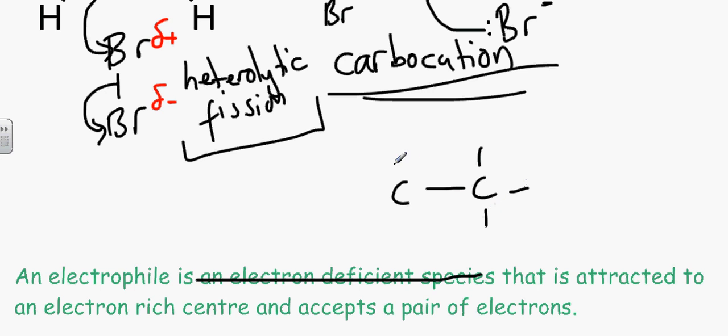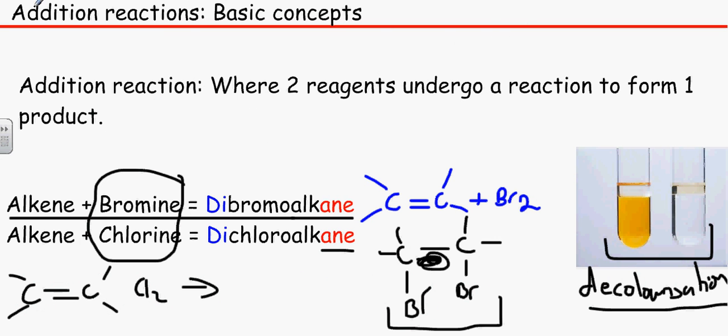Now it is strongly attracted to this carbocation. It's like two people in love, and therefore the electrons get transferred to the carbon which is obviously deficient in electrons. And we will end up with 1,2-dibromoethane.